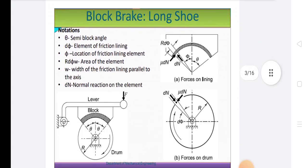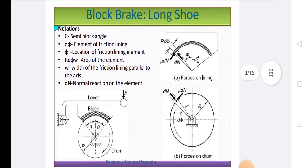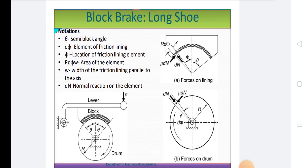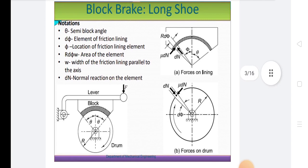This is the diagram of block brake for long shoe. Here in the diagram, there is θ the semi-block angle, dφ is the element of friction lining, φ is the location of friction lining element, R dφ area of the element, W is the width of friction lining parallel to the axis, dN is the normal reaction on the element. Here all the forces on lining and forces on drum are shown.